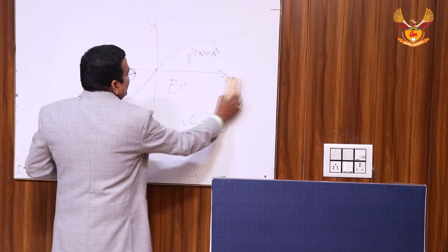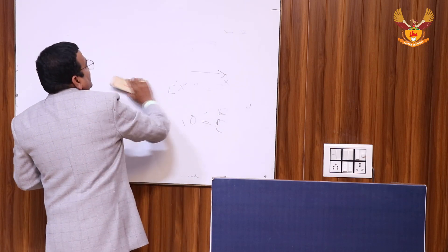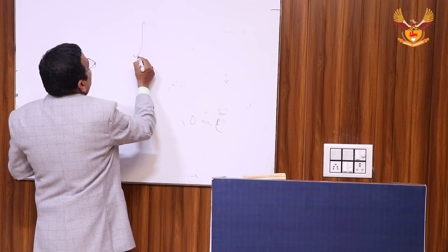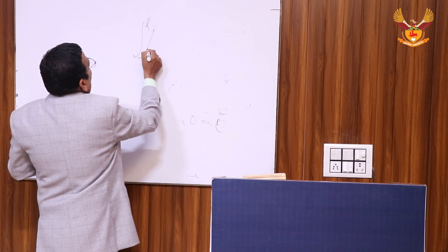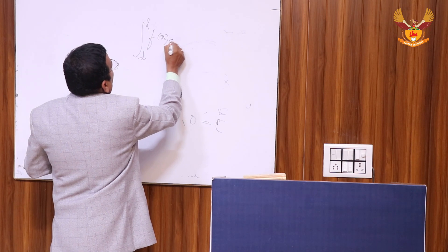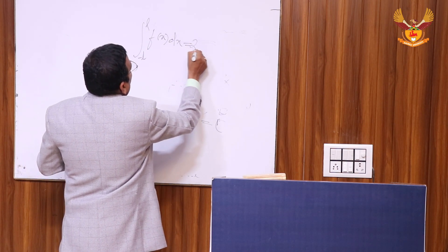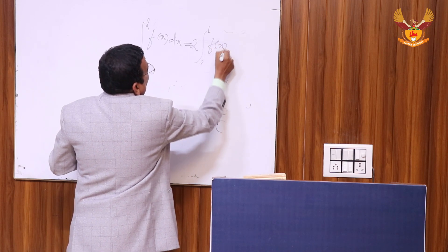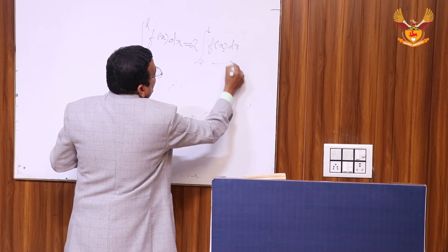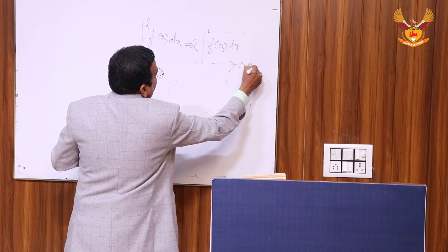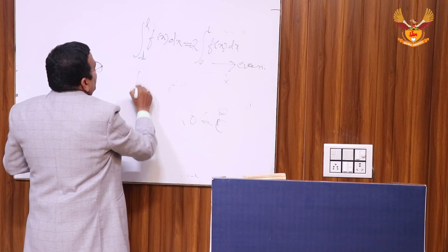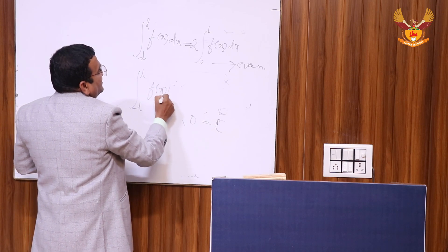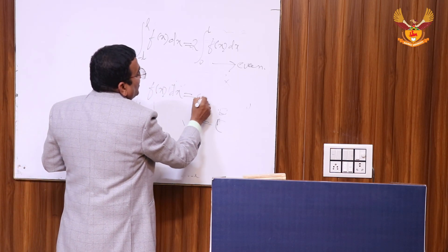More important properties: if the function is even, then the integral from -l to l of f(x) dx equals two times the integral from 0 to l of f(x) dx. This is the case of the even function. In the case of the odd function, the integral from -l to l of f(x) dx equals 0.